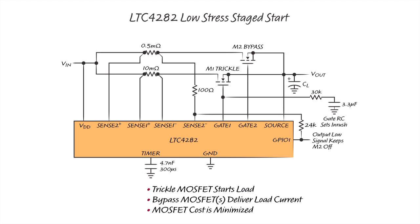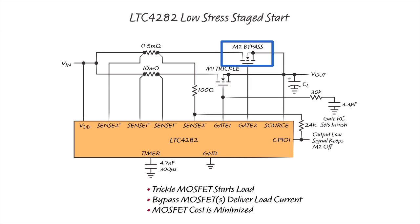The first architecture type we call low stress staged start. This configuration benefits applications where the load is held off until power good is asserted. In these applications the hot swap only needs to charge load capacitors during startup and also needs to survive if a short circuit is present at the output. To avoid high power dissipation in fault scenarios, the LTC4282 charges the load with a low inrush current through a small trickle MOSFET with a low current limit on one gate driver, while the other gate driver turns on a group of small low-RDS(on) bypass MOSFETs only after the output has successfully been brought up. Since the bypass MOSFETs have low SOA, the circuit breaker timer is set to a short time to turn off the MOSFETs quickly in the case of an overload.